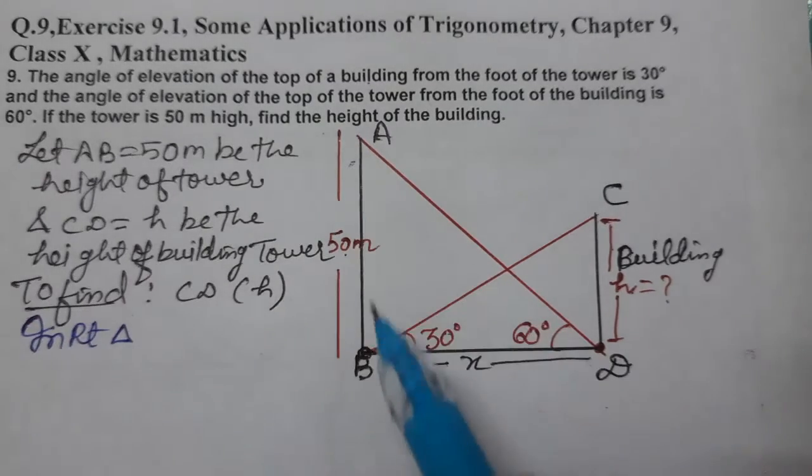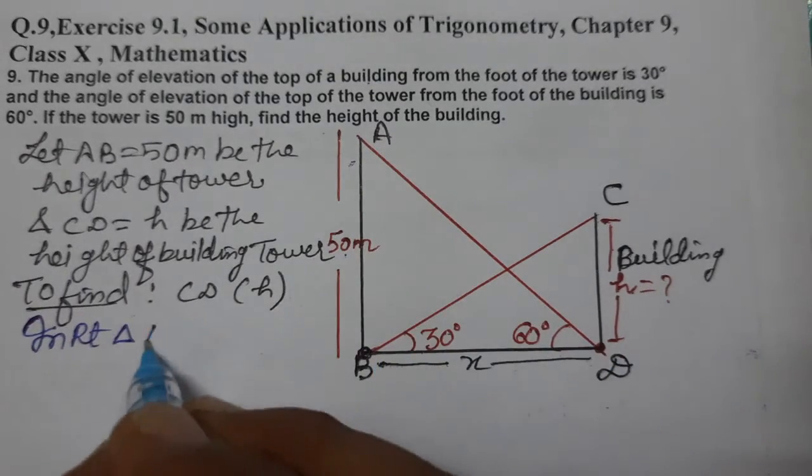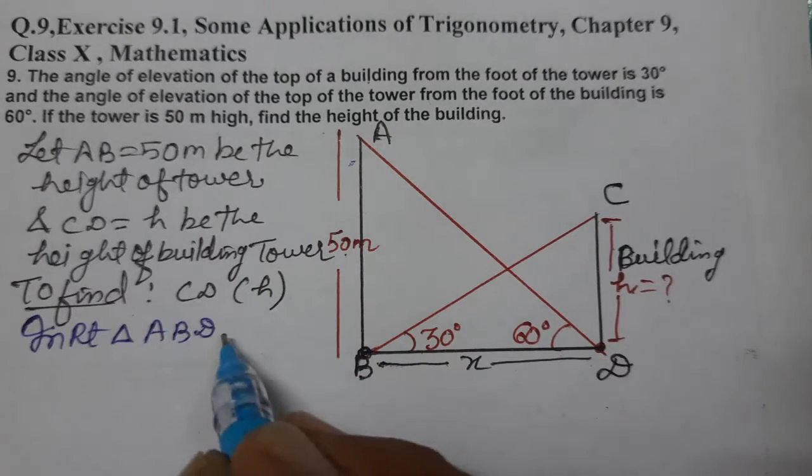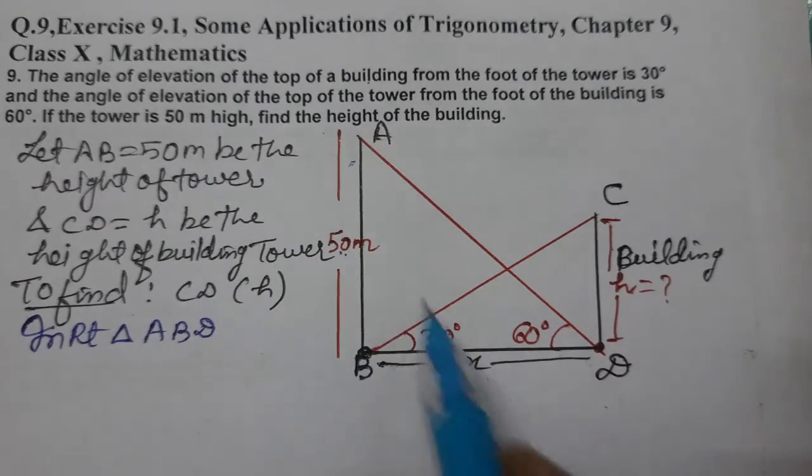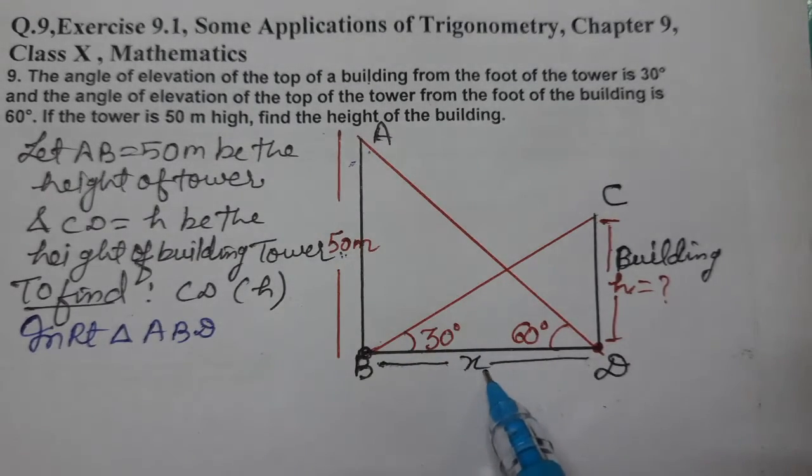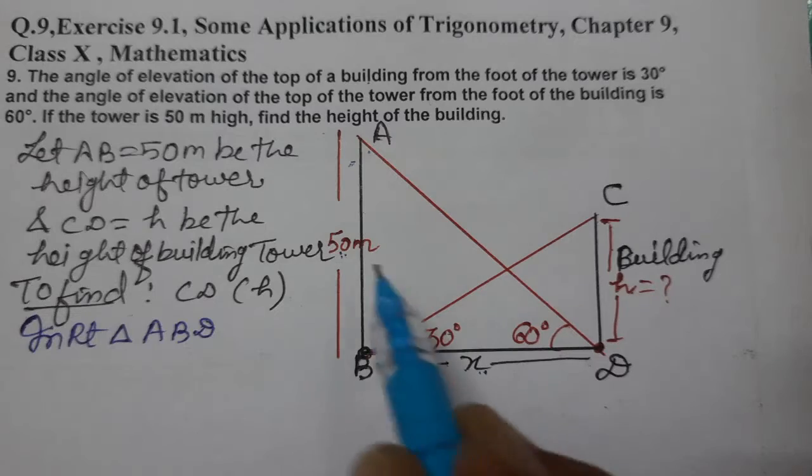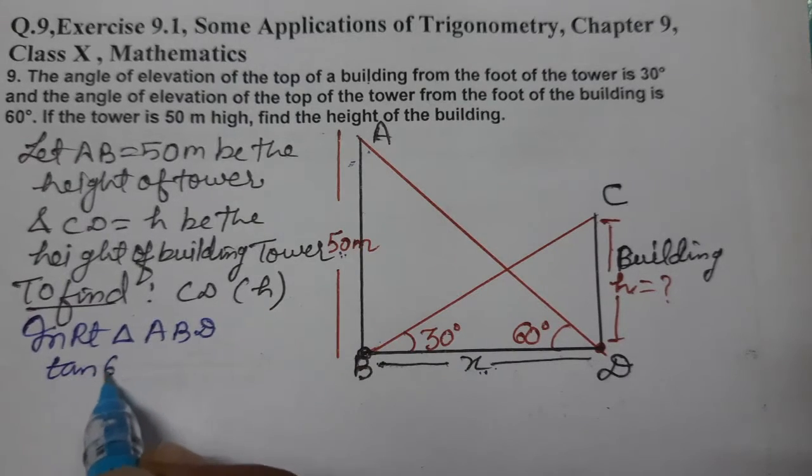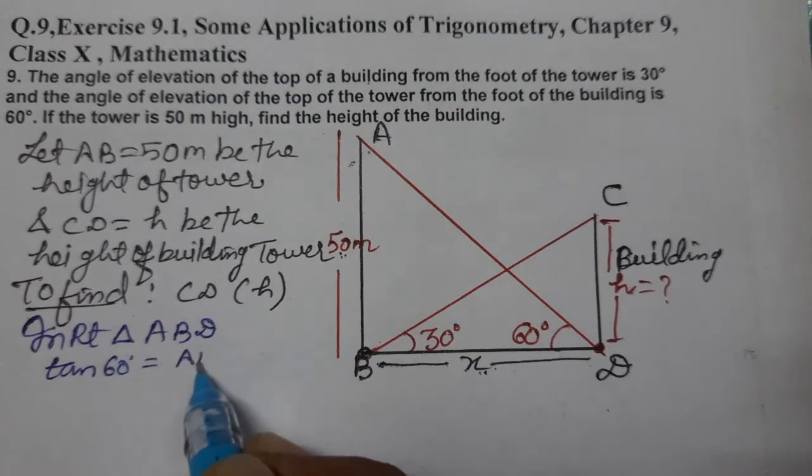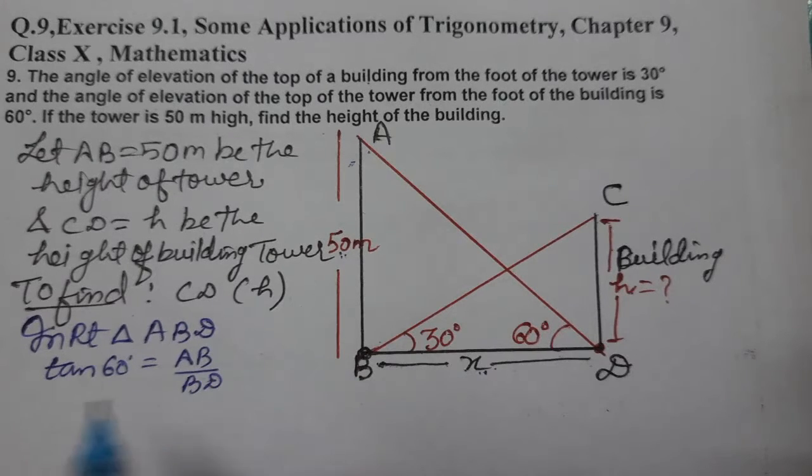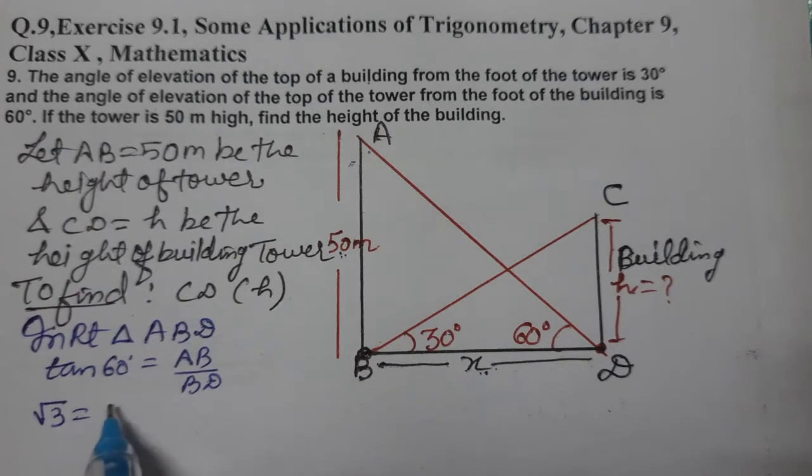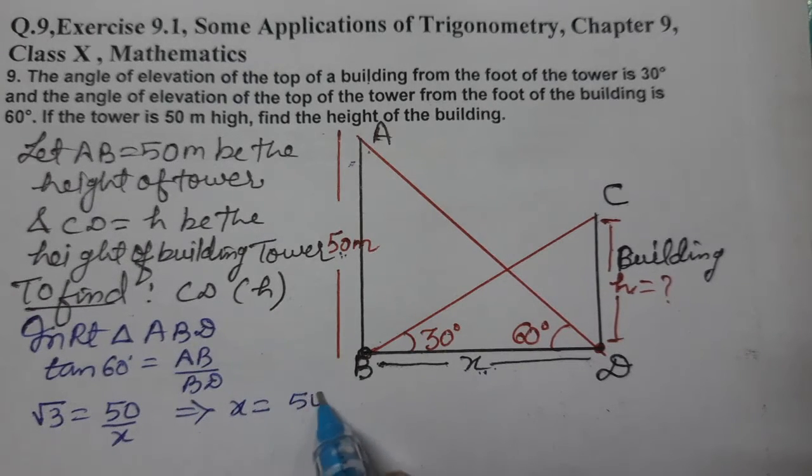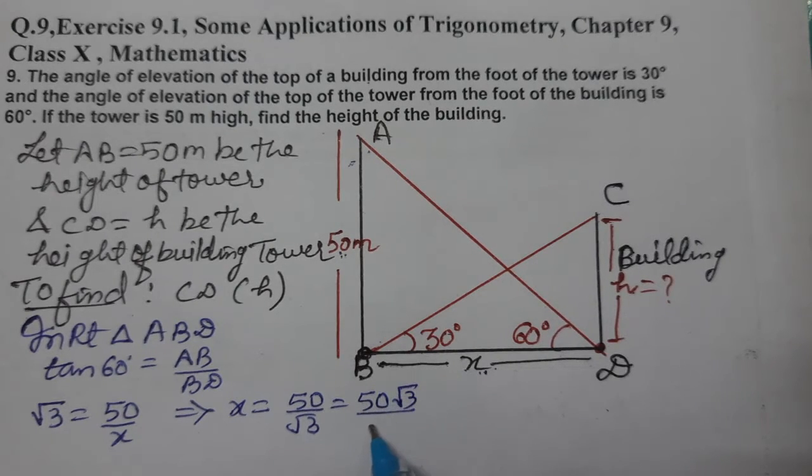In right triangle ABD, let's take first triangle ABD. In right triangle ABD, dekho kya given hai aur kya nikalna. Given hai AB aur ye nikalna hai x. Perpendicular and base, so perpendicular upon base ka ratio hota tan. Tan 60 ho gaya, AB upon BD. Tan 60 ki value hoti root 3, aur AB hai 50, aur BD kitna - x. To isse x equals to 50 by root 3. Rationalize kar de: 50 root 3 by root 3 into root 3, which is 3.